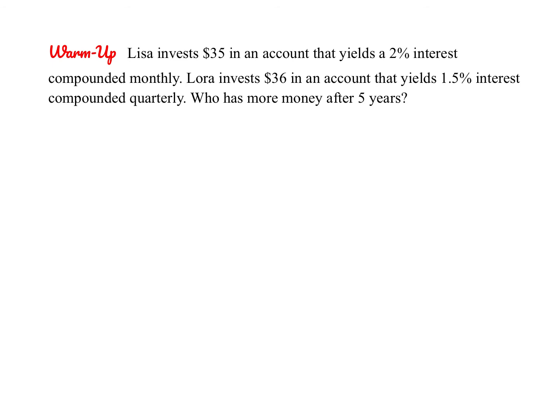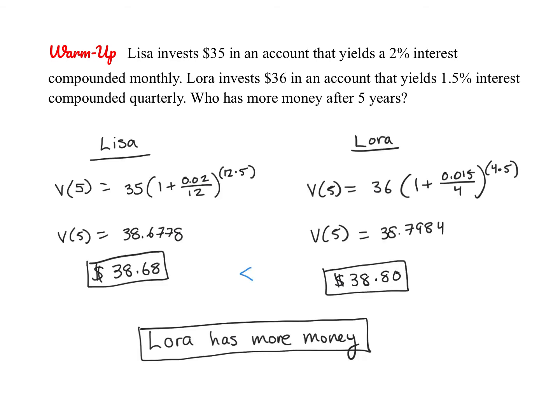I have a quick warm-up for you guys, so please pause the video and give this one a try. Alright, check your work — I used the compound interest formula for both. For Lisa, the R-value is 0.02 and N is 12 because it's compounded monthly. For Laura, the R-value is 0.015 and N is 4, with a slightly different initial amount. After five years, Laura has 12 cents more, making it the more optimal account.